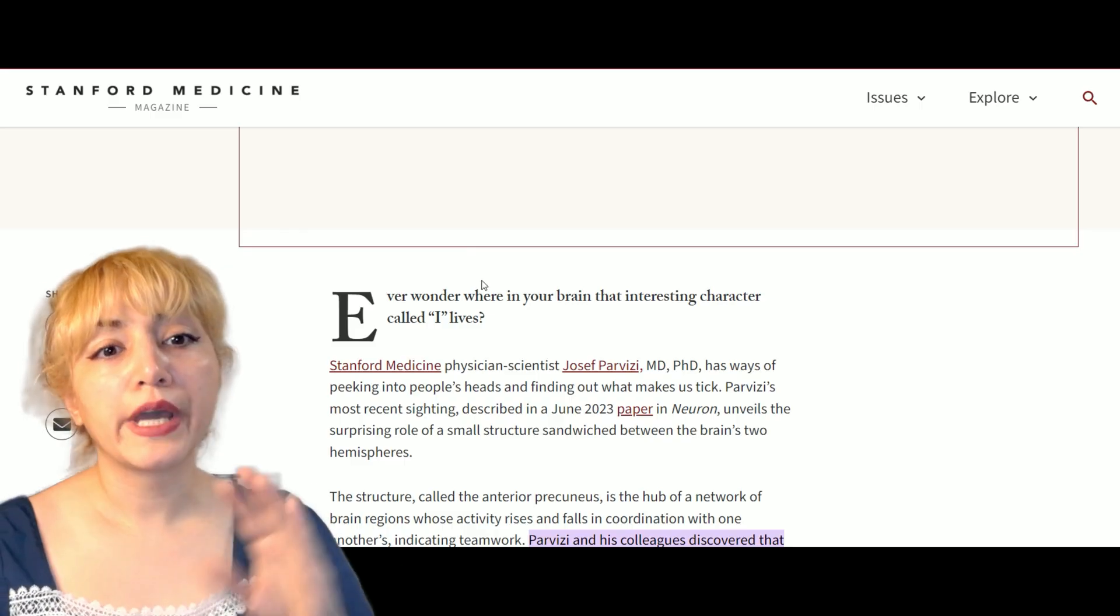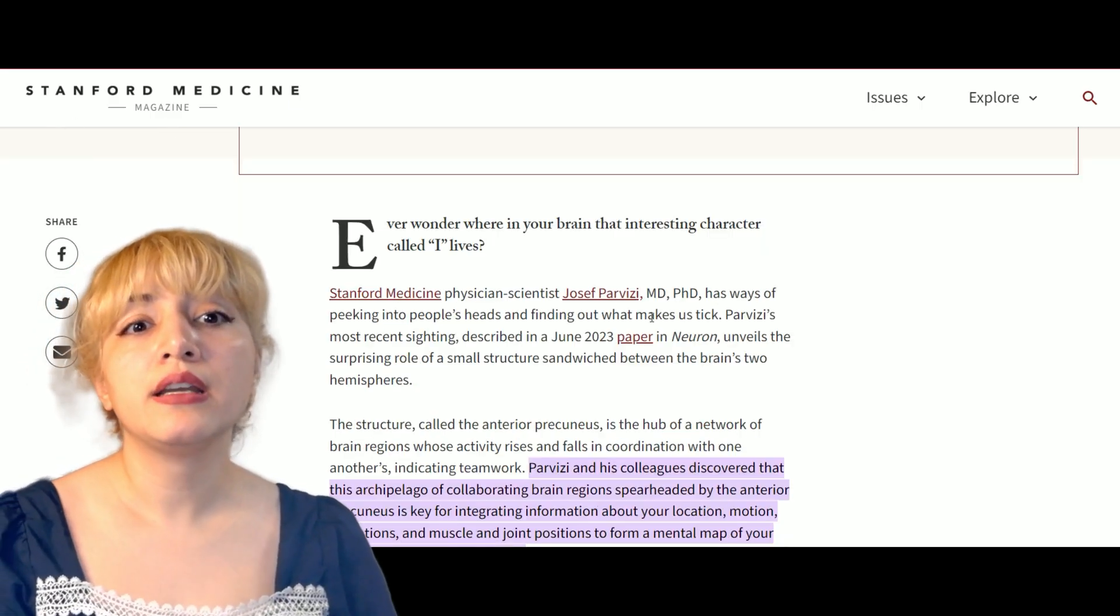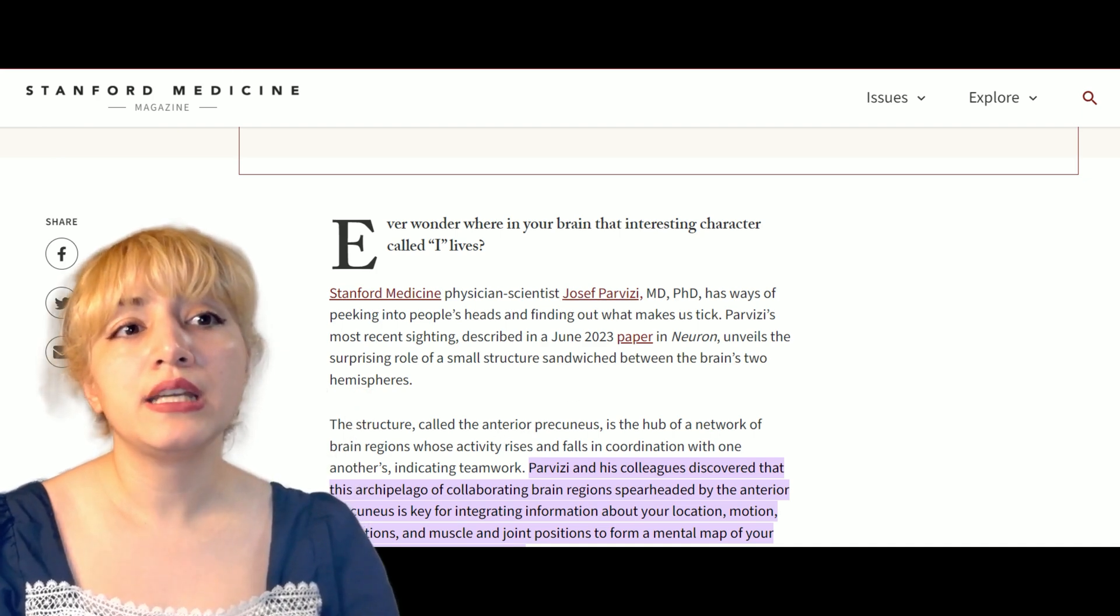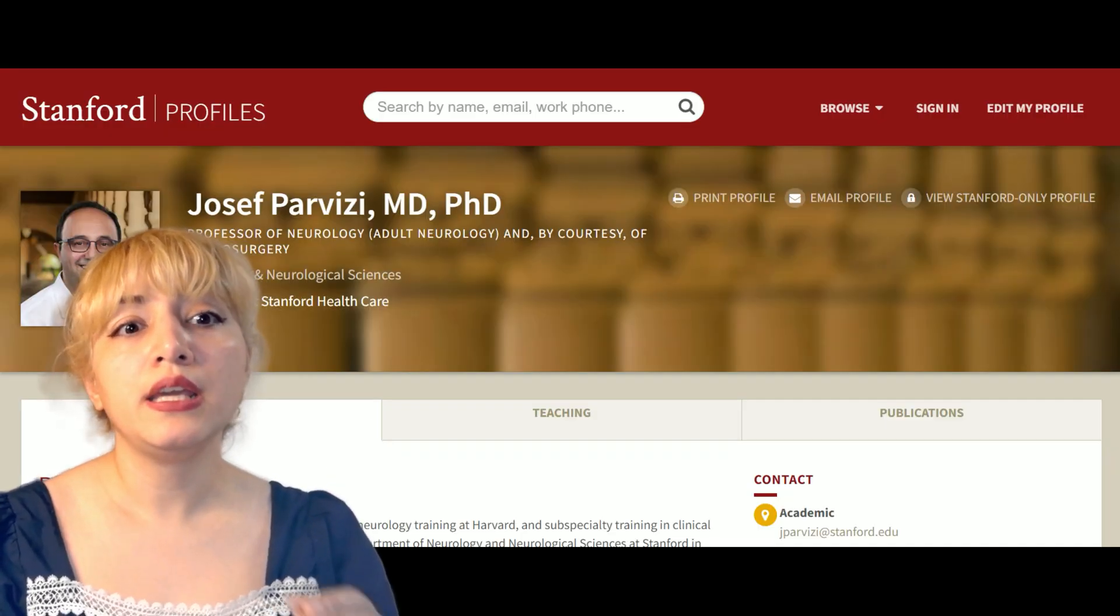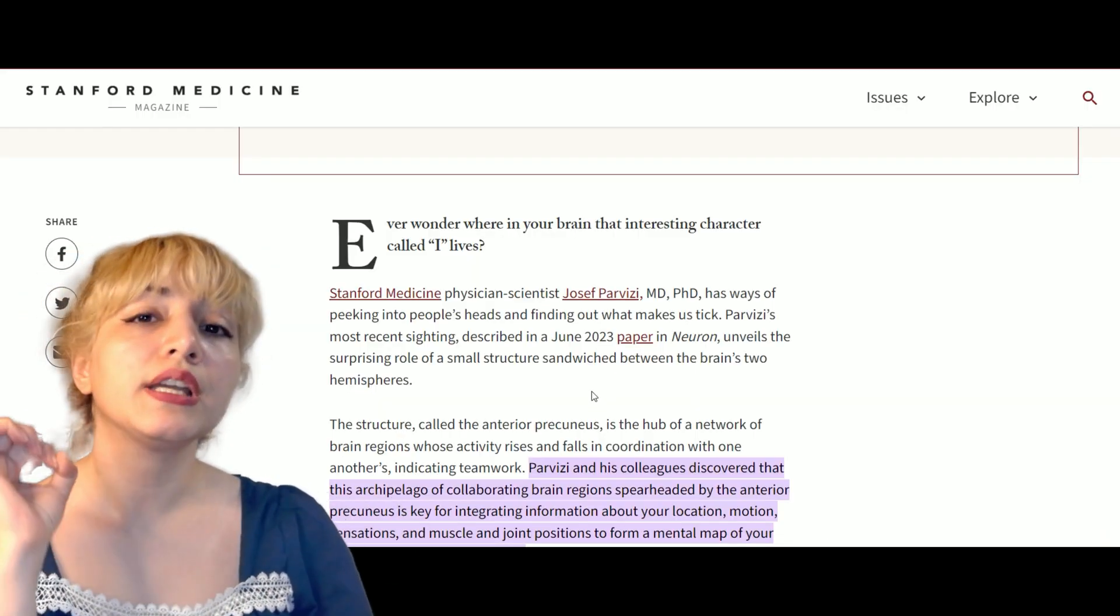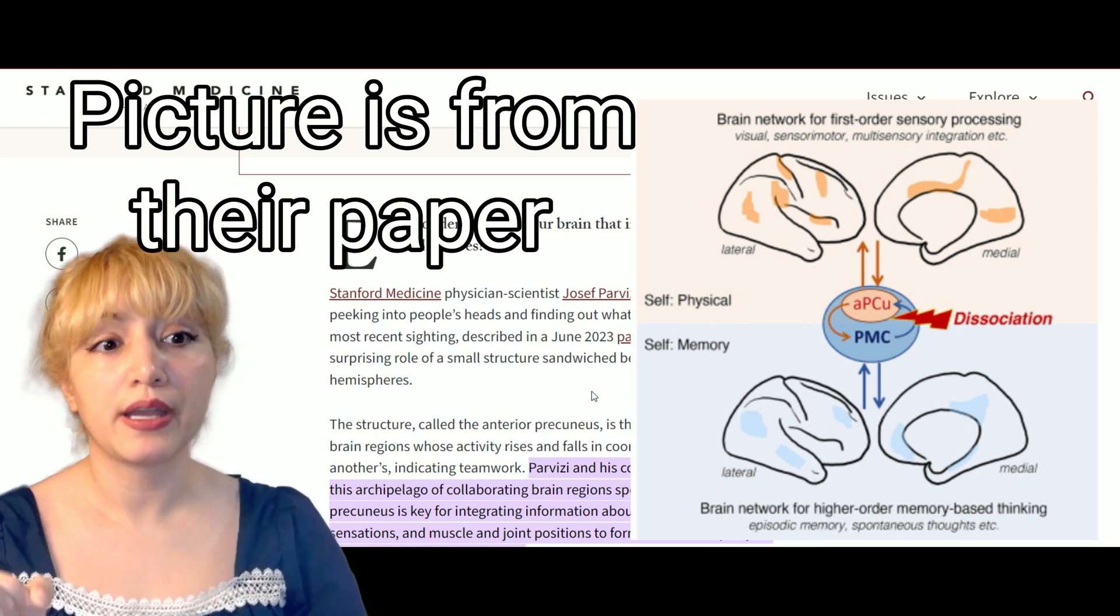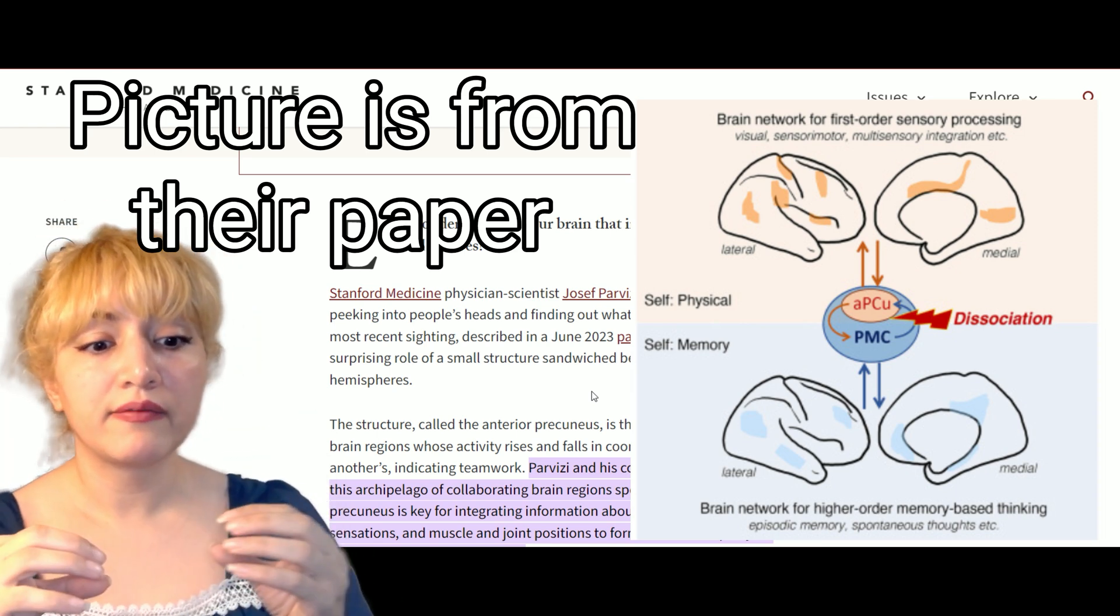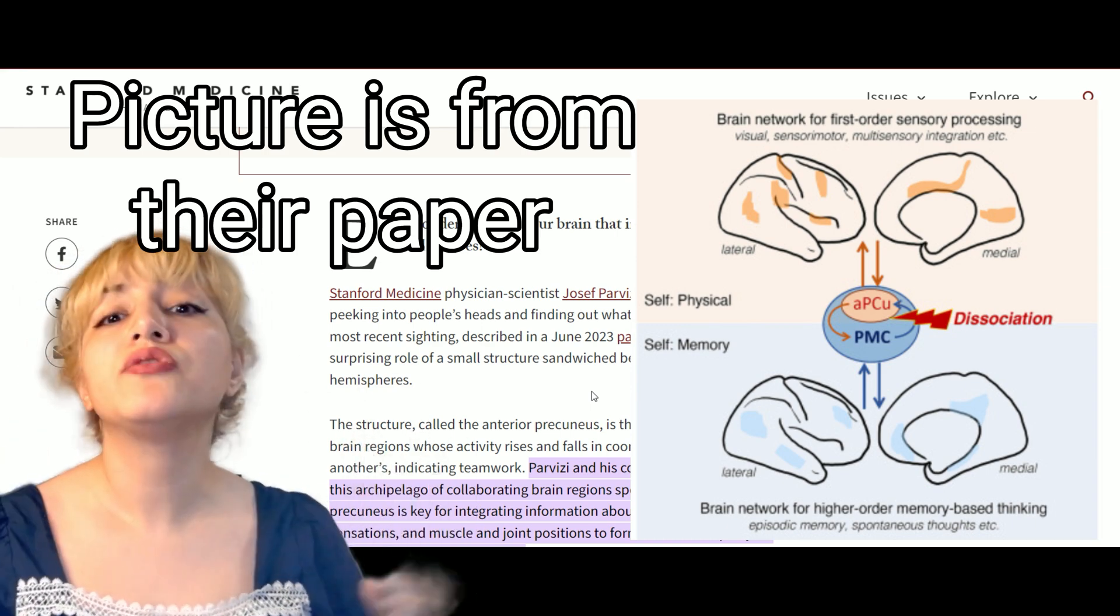Now I did some research and I found this paper. In Stanford Medicine Magazine, Joseph Parvisi and his team has found a structure in the brain called anterior precuneus. That's between the two hemispheres, and it has a very complex connection with the rest of the brain.